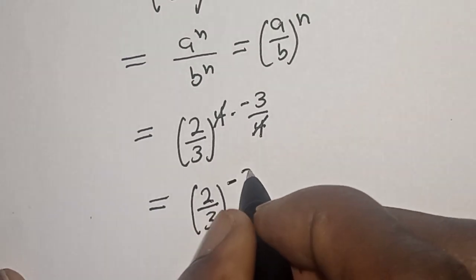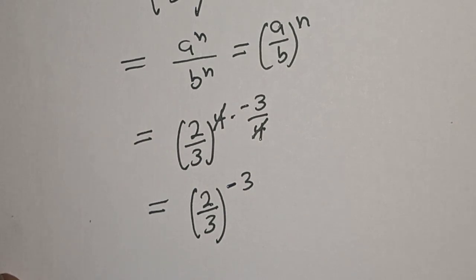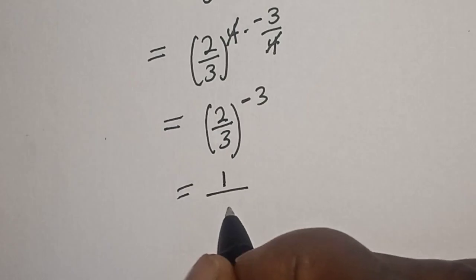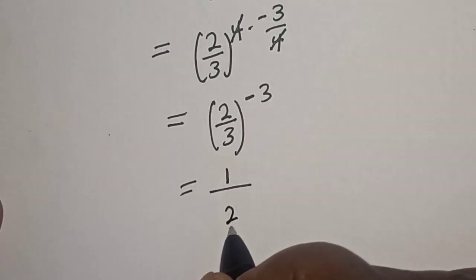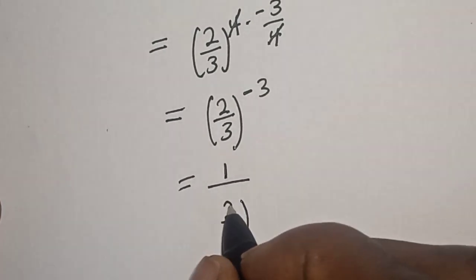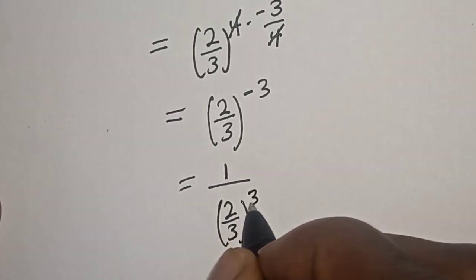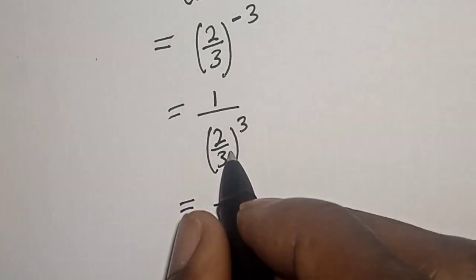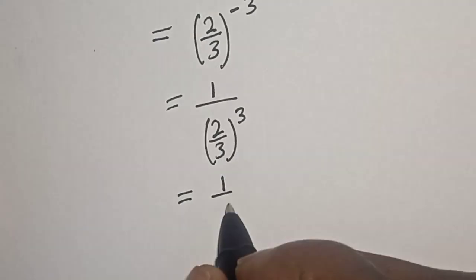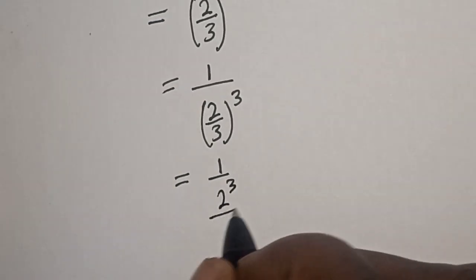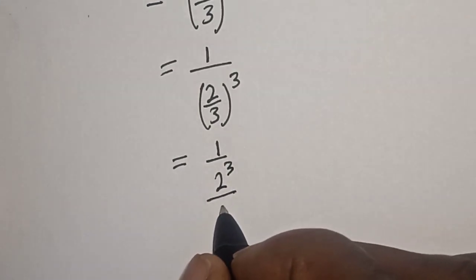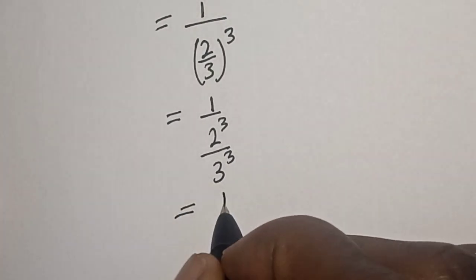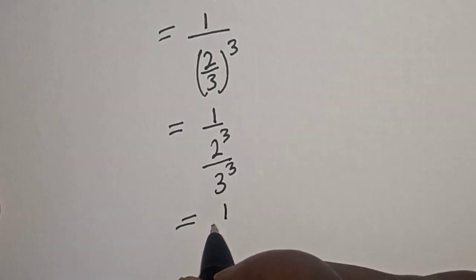And this is equal to 1 over 2 over 3 raised to power 3. Then this is equal to 1 over 2 raised to power 3 over 3 raised to power 3.